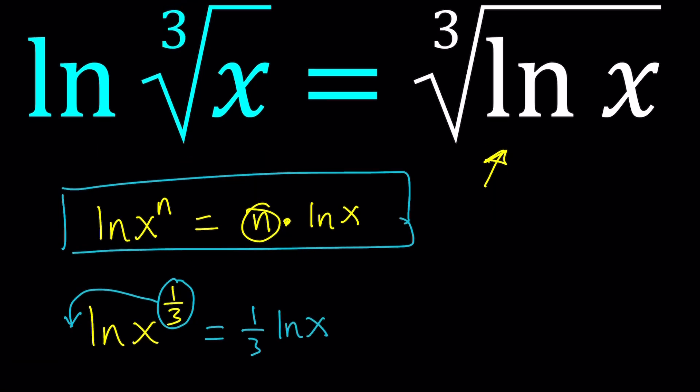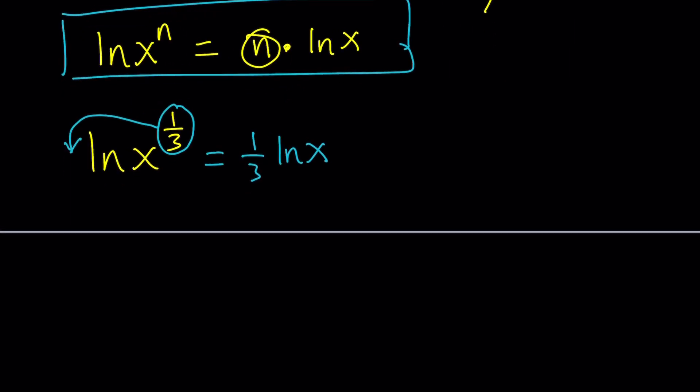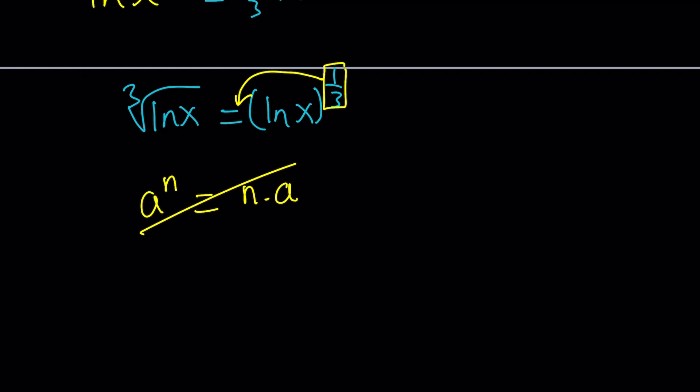What about the right hand side? We just have the cube root of ln x. What can we do about it? We can write it as ln x to the power one third. But that would not be a huge improvement, because this one third is not going to move. You've got to be careful. Don't move this to the front, because it's kind of like this. You have a to the power n, and you're just saying that, hey, this is the same thing as n times a. Well, there might be cases where this is true, but in general, this is not true. Okay, so we're going to leave it at that.